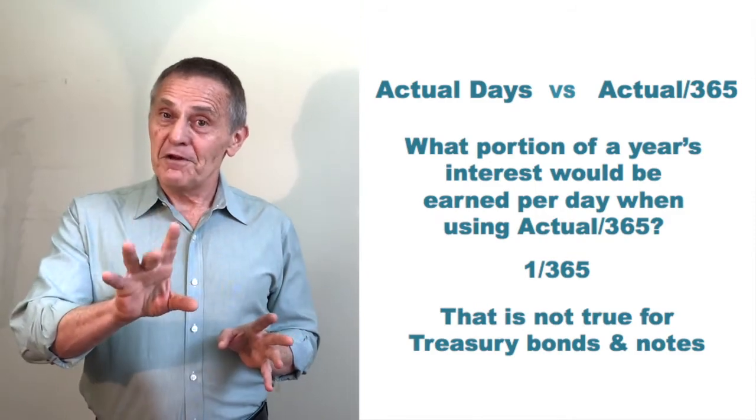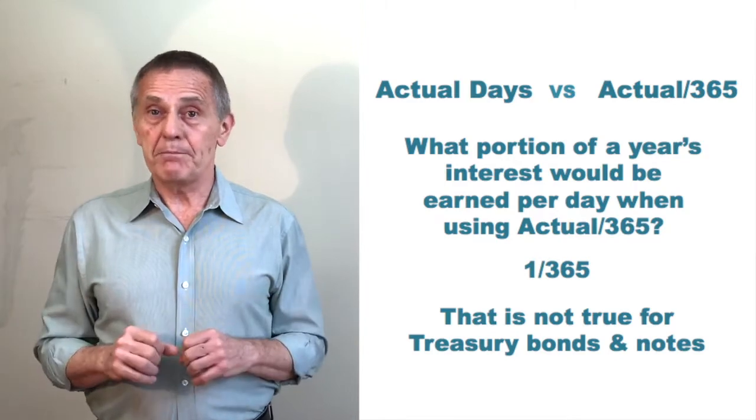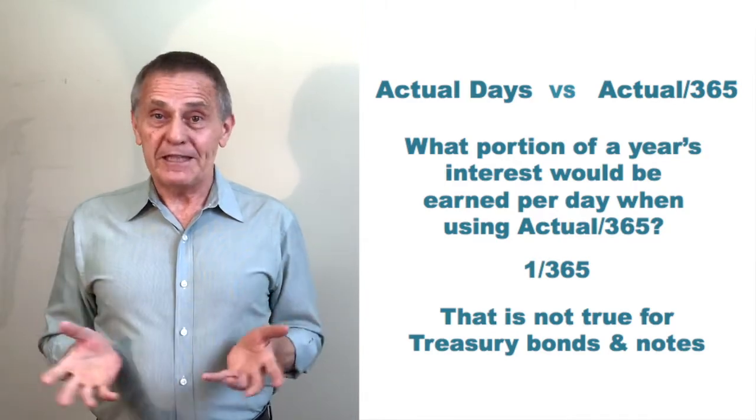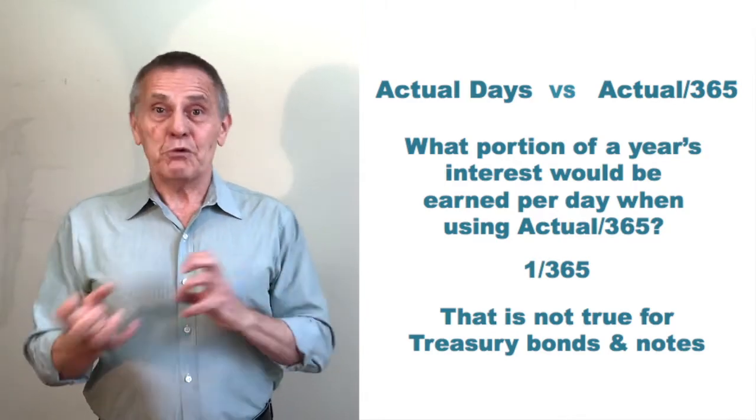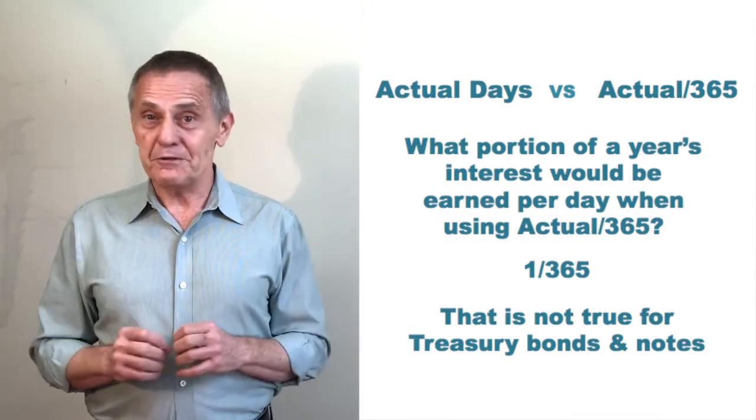Now, don't laugh. That was the day count convention in the UK gilt market and the UK government bond market up until somewhere in the early 1990s. They used actual over 365 and the assumed length of a coupon period was 182 and a half days.